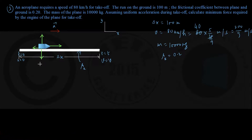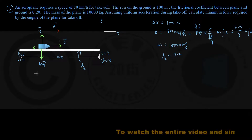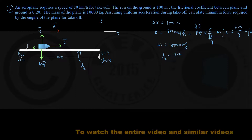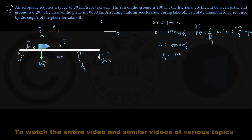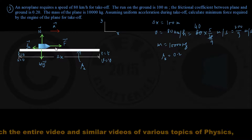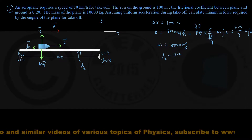Let me write the forces: force of gravity mg, normal force N acting in the y direction, propulsive force of the engine capital F acting to the right, and the force of kinetic friction acting to the left. Now let us write down the equations of motion of the aeroplane.